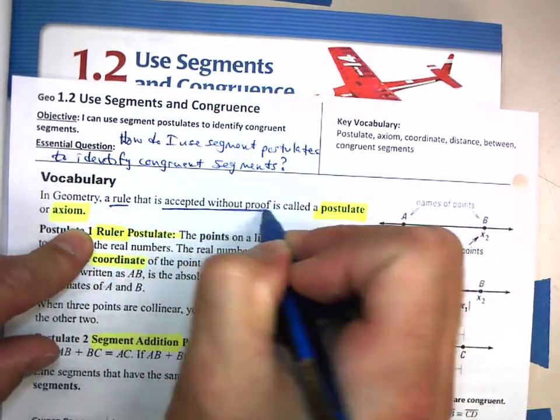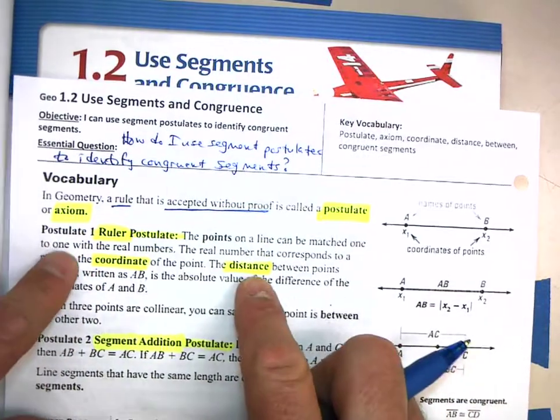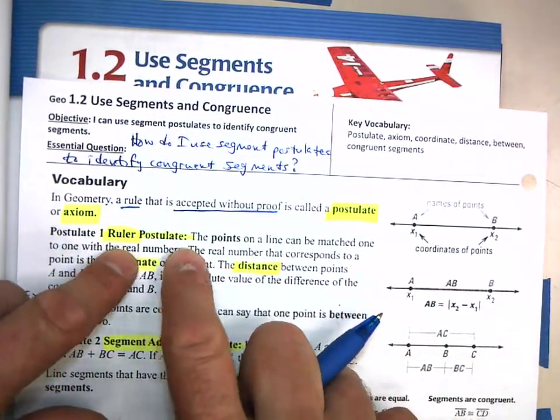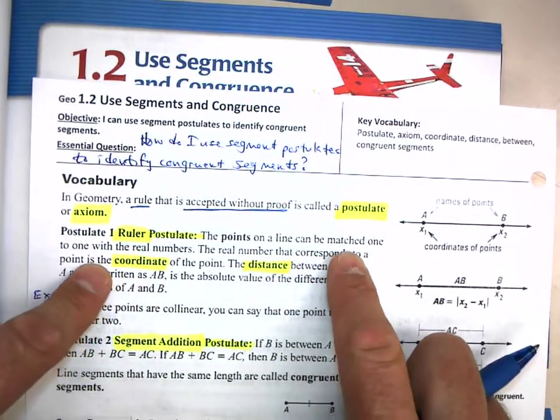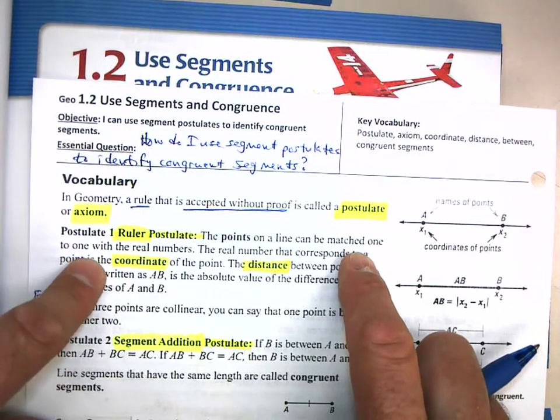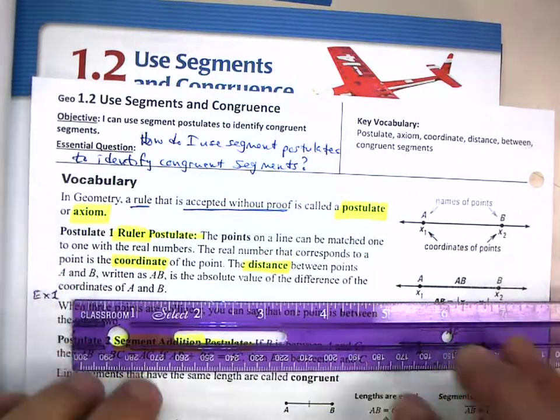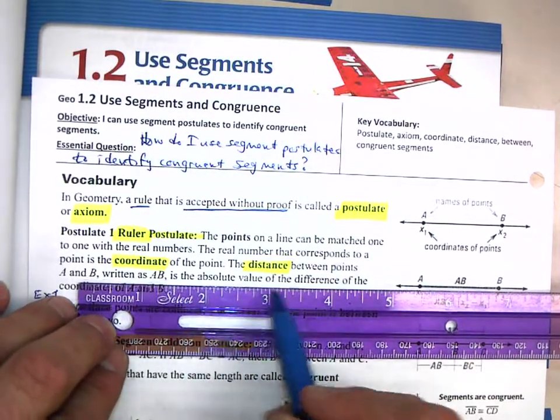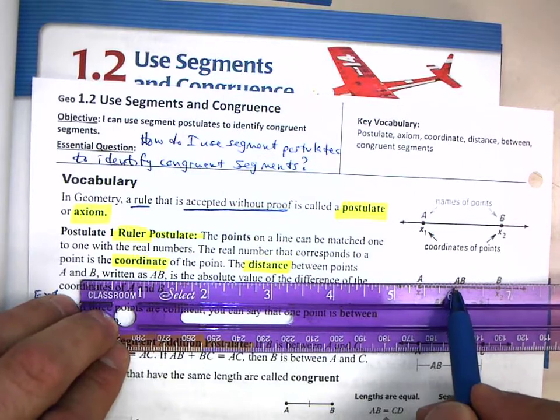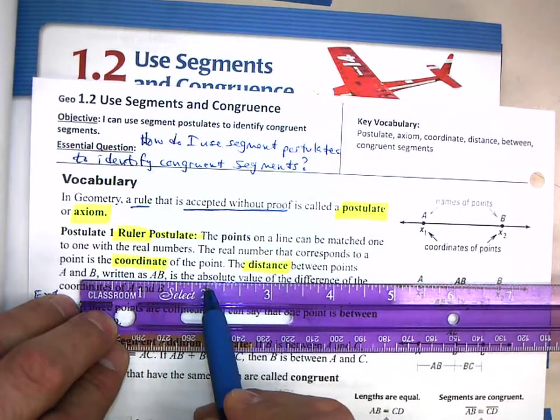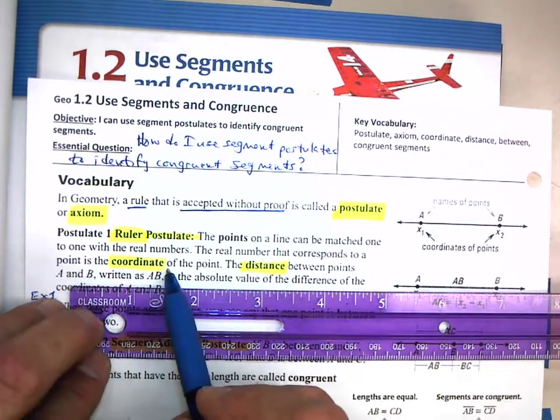Here's an example: Postulate number one, we call it the Ruler Postulate. The points on a line can be matched one-to-one with real numbers. Here is my ruler and here are points on this line, and each of those points can be matched with a real number.